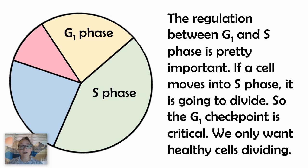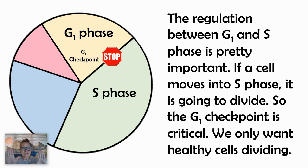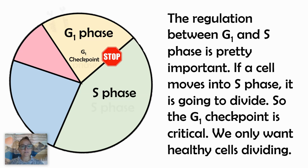The checkpoint between G1 and S is critically important. We want to make sure our cells are healthy and the DNA is intact — there's no damage or massive mutations. We only want good cells to go through the cell cycle. We have this G1 checkpoint to help cells pause and check. But how do cells actually move through that checkpoint? How come cells aren't always just going into S phase?